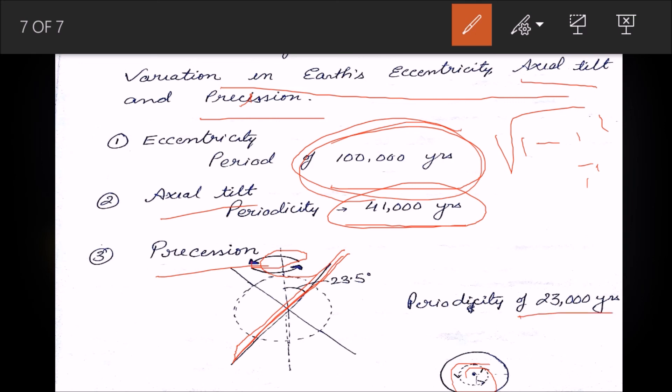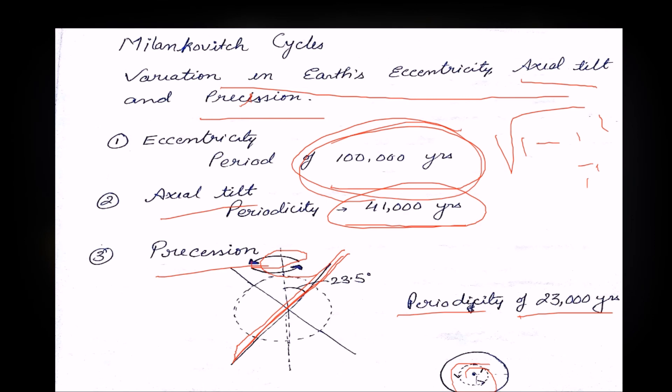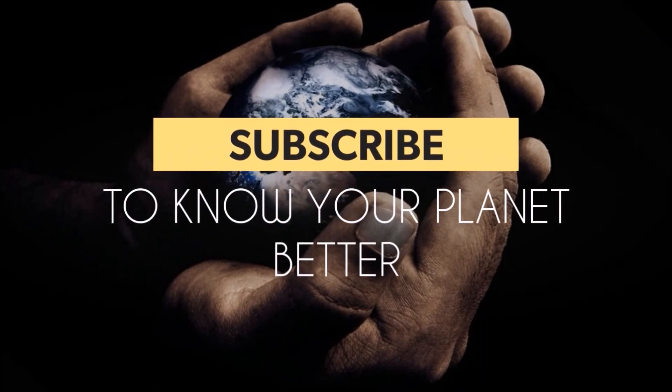So this is it for this video. We will move on and see in detail about Earth's surface, Earth structure, and various other properties related to Earth. We will explain all the g values and differences in g values at different places in the next video. Till then, please like the video, subscribe to my channel, and comment the answers to the two questions I have put. See you in the next video. Thank you. Subscribe to know your planet better.